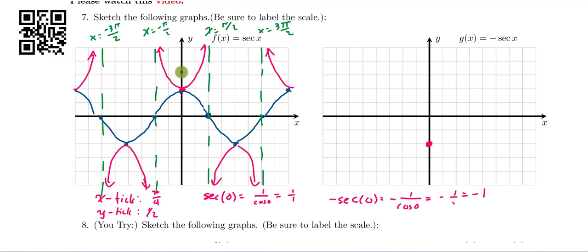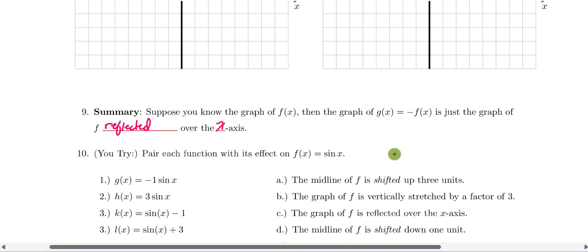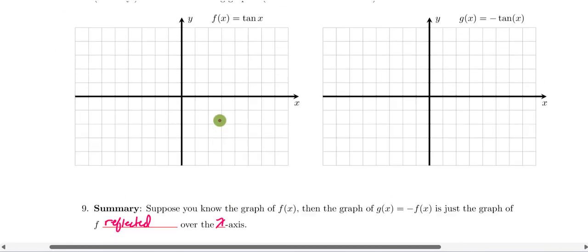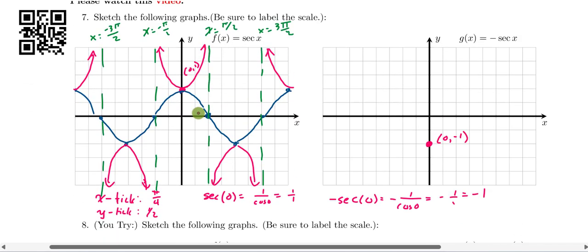This outputted the ordered pair 0, 1. This is going to output the ordered pair 0, negative 1. And in fact, that's going to have the effect, like we just said down here, of reflecting the graph about the x-axis. So let's go ahead and check that.